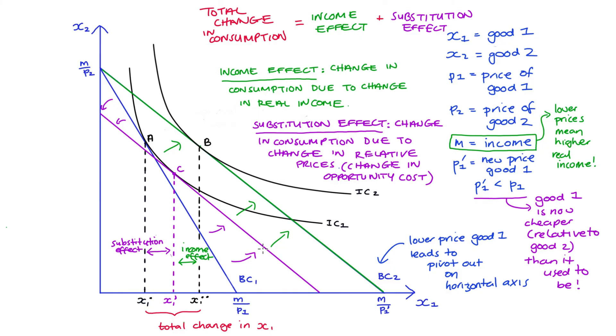The take home here for the diagram is that we pivot but stay on the original indifference curve and then we shift. So the pivot, see what's happening to our consumption of good one, that's our substitution, and then we shift to the new bundle which here is bundle B. That's our income.